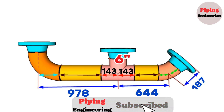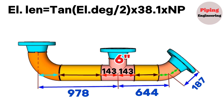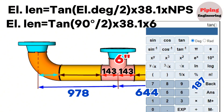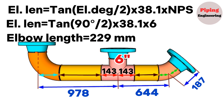We use this formula to find the length of the long radius elbows: elbow length equals tangent of (elbow degree divided by 2), multiplied by 38.1, multiplied by nominal pipe size of the elbow. For a 6-inch 90-degree elbow: tangent(90/2) × 38.1 × 6 = 229 millimeters. So the length of the 6-inch 90-degree elbow is 229 millimeters. We will write this 229-millimeter measurement in our pipeline.